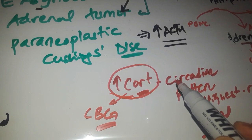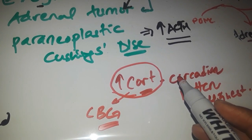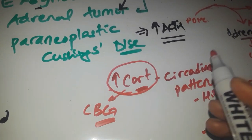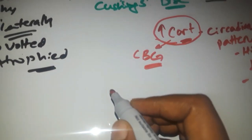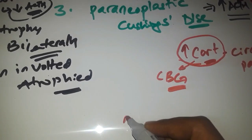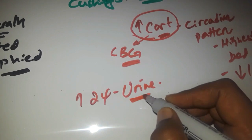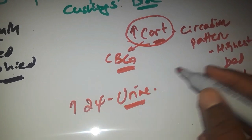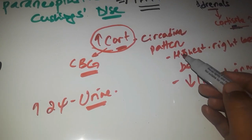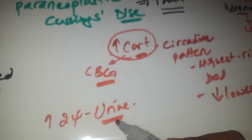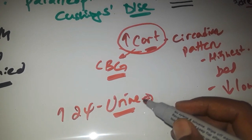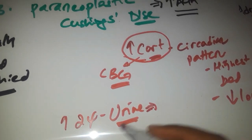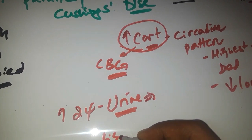We need special patterns of measurement to establish the diagnosis. There are three ways to measure cortisol. The first is a 24-hour urine collection, which tells us the overall amount of cortisol in the body and rules out the time-of-day variation. The 24-hour urine cortisol collection tells us the total cortisol the person has throughout the day.